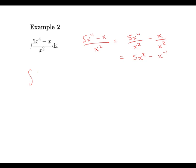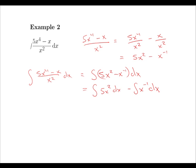And now the integral of 5x^2 minus x^(-1) dx. We can split up this difference between these two functions as two separate integrals. So the integral of 5x^2 dx minus the integral of x^(-1) dx. And finally we can simplify the first integral as 5 times the integral of x^2 dx.